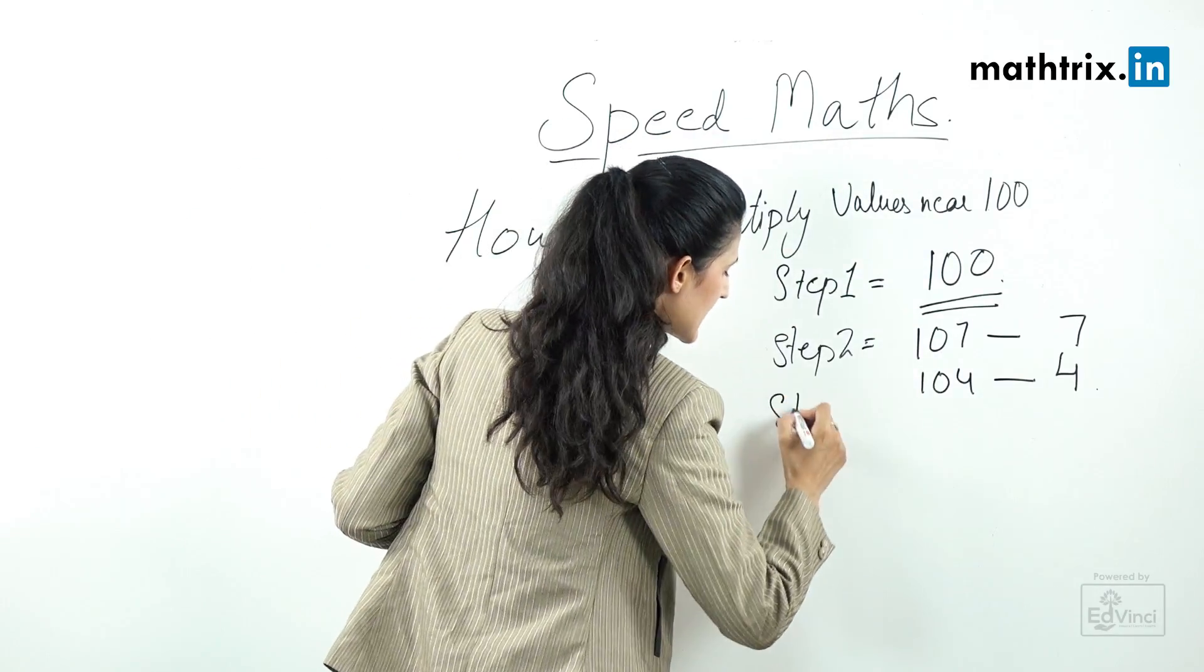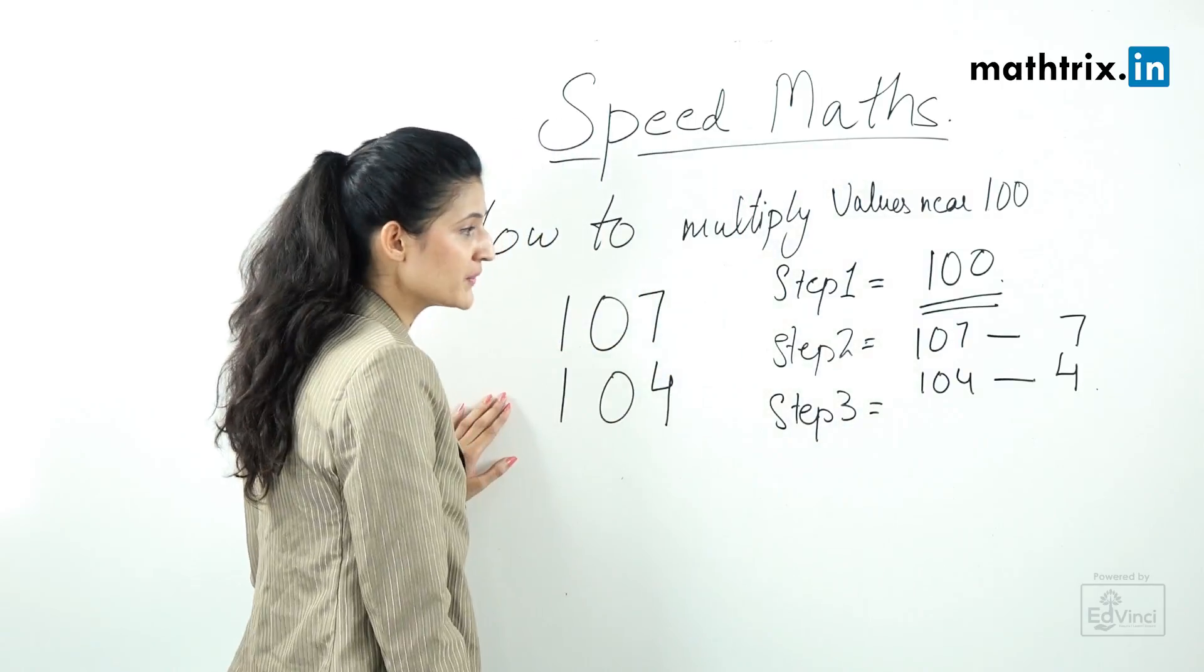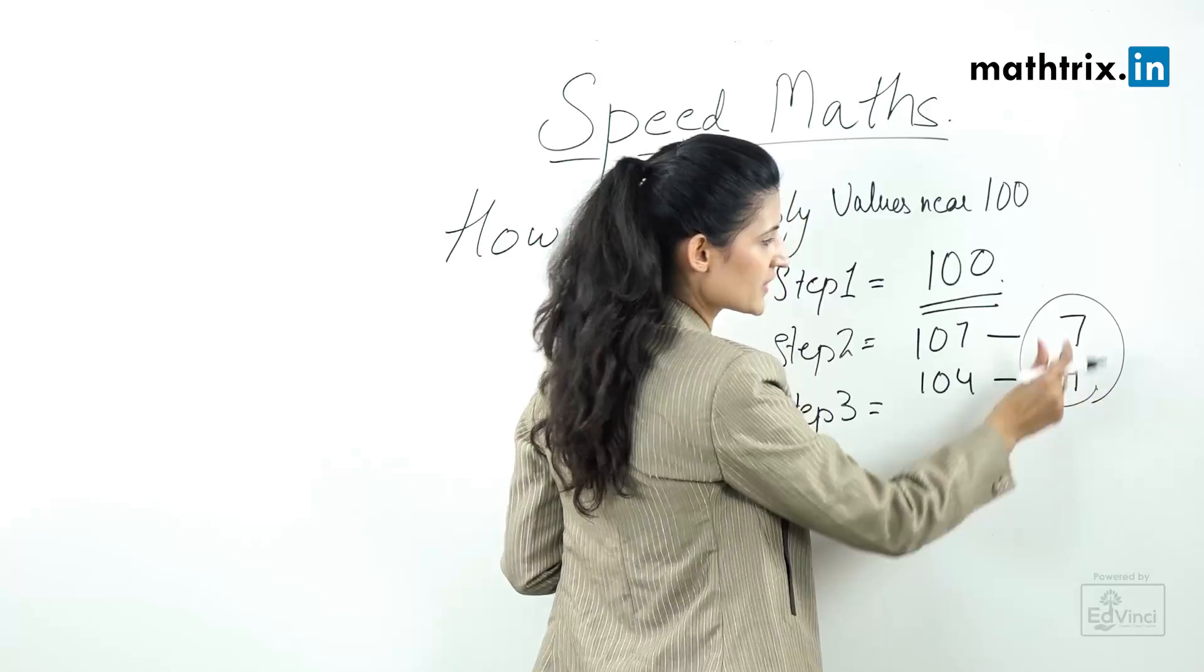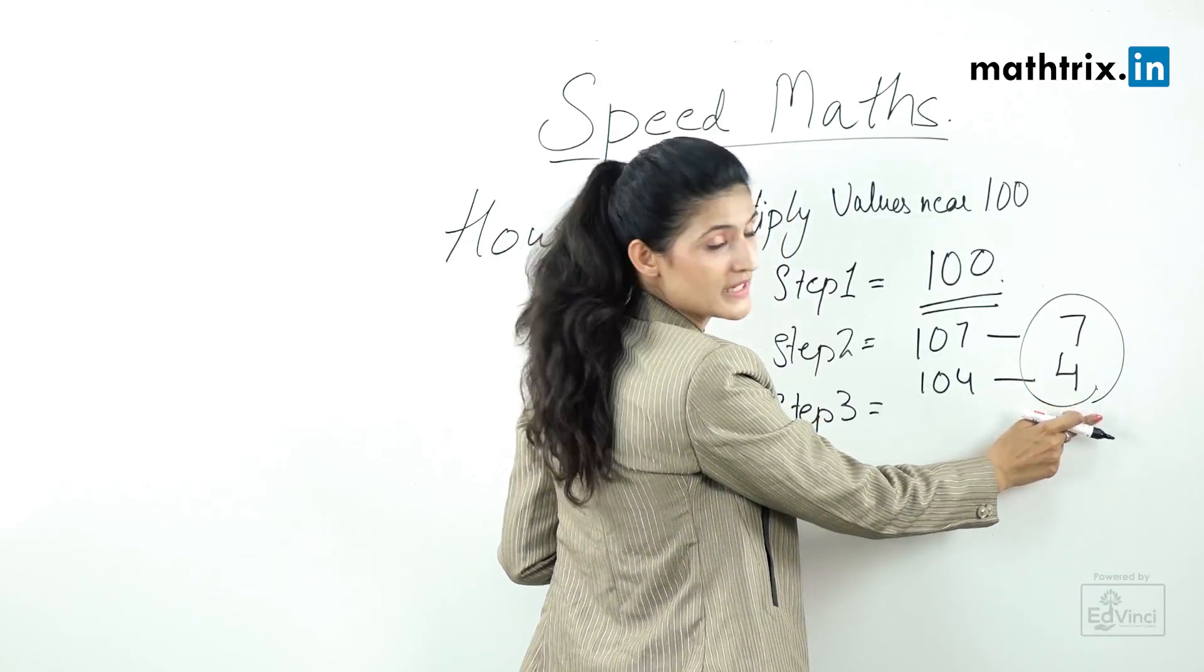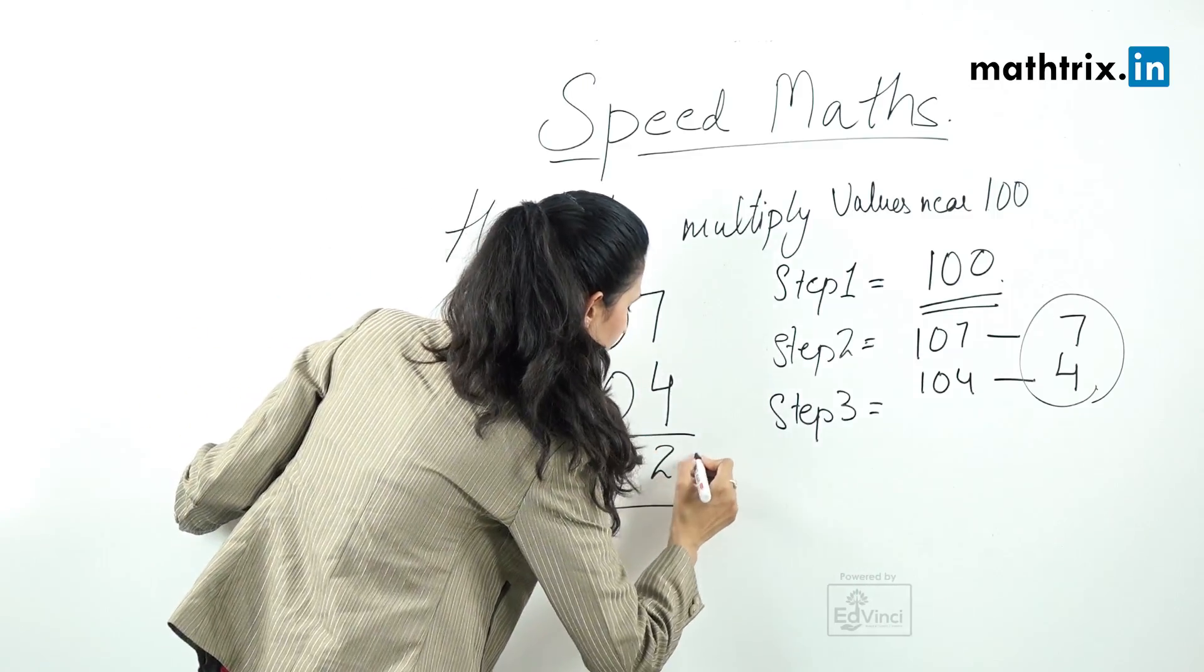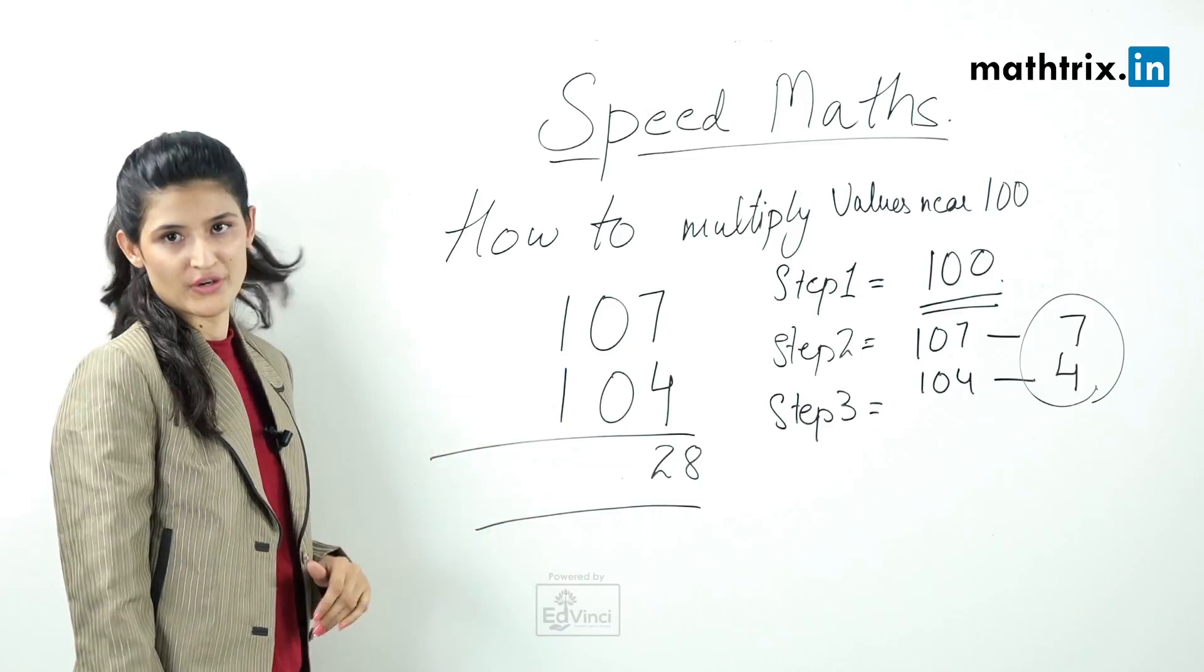Move to step number 3. In step number 3 you have to multiply the differences which is 7 into 4 equals 28 and write it down here. So this is the last 2 digits of your answer.